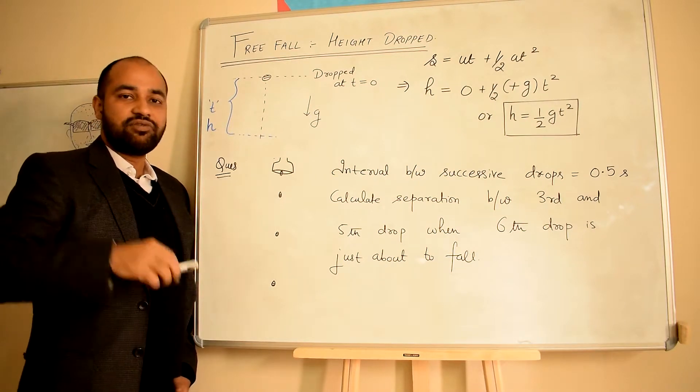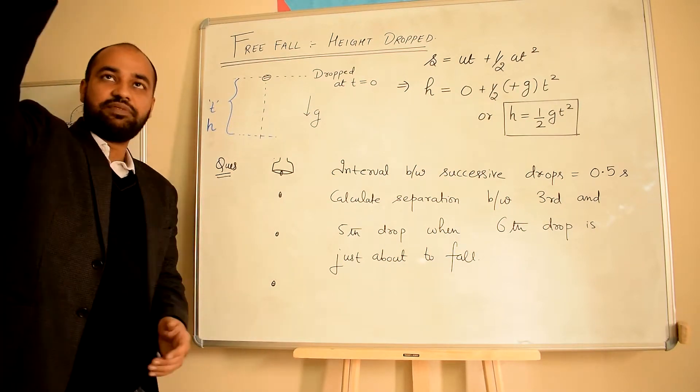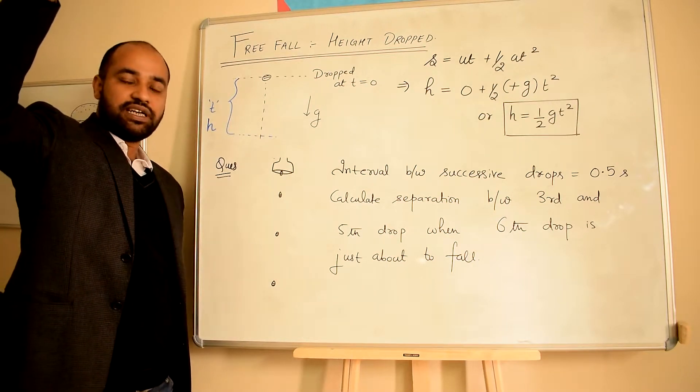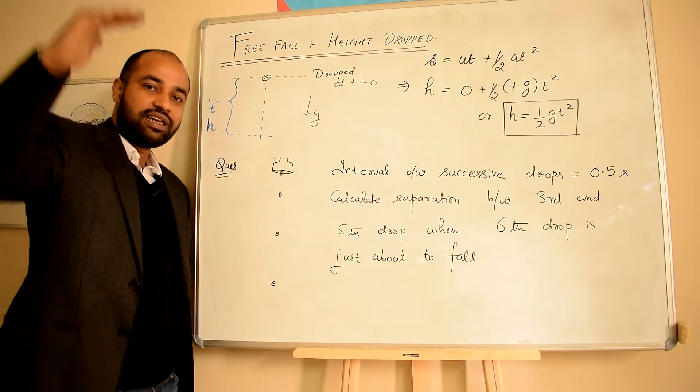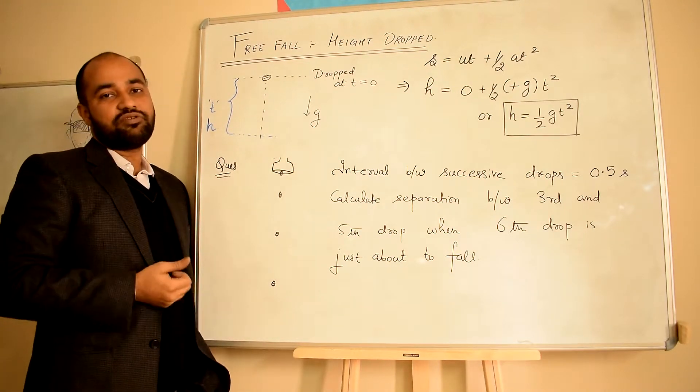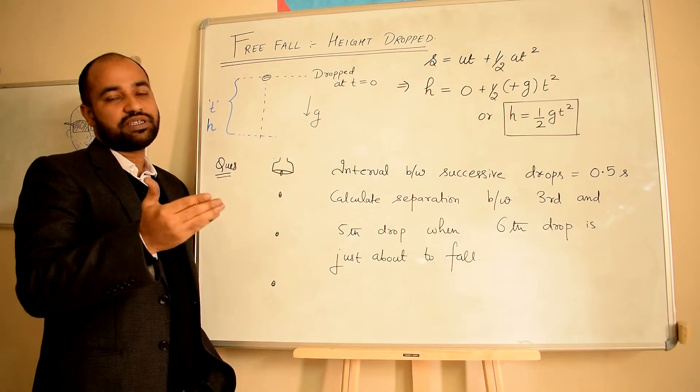When something is falling freely under free fall, from the initial position, how much height drops in time t? We can determine this by using the equation of motion, S = ut + ½at².